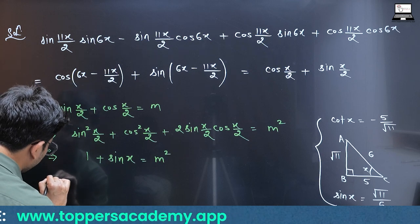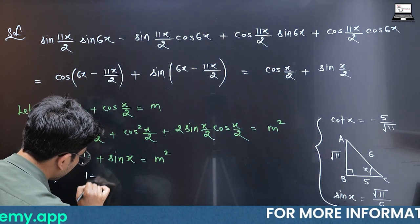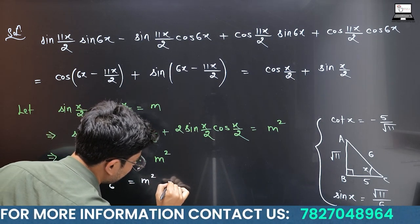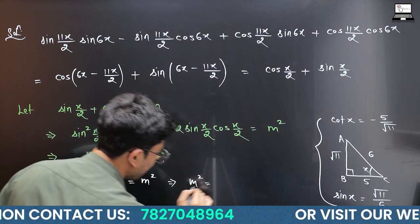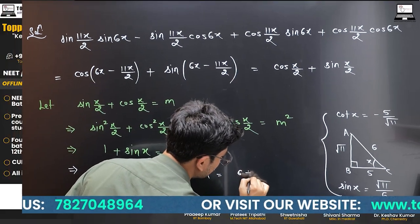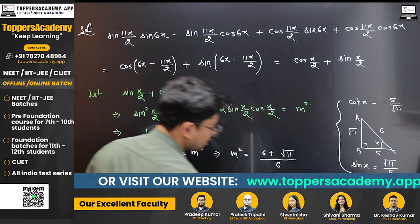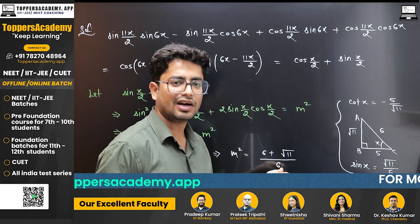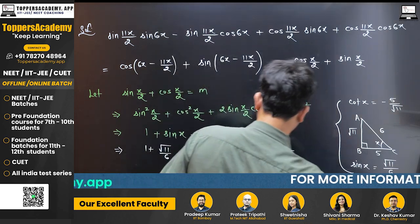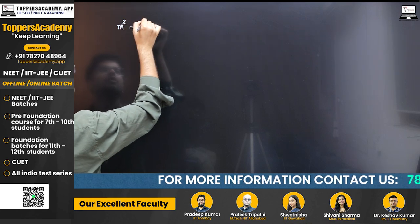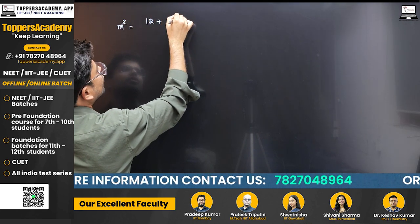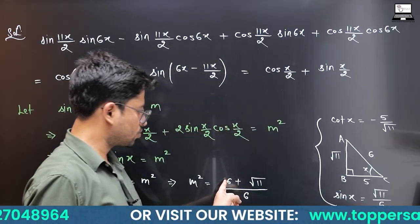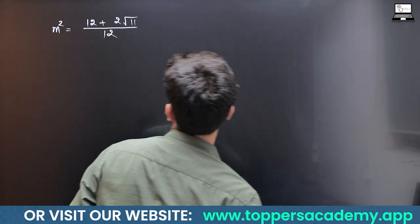Substituting back: m² = 1 + √11/6 = (6 + √11)/6. Multiplying numerator and denominator by 2 gives m² = (12 + 2√11)/12.